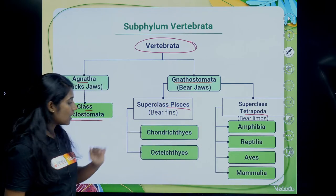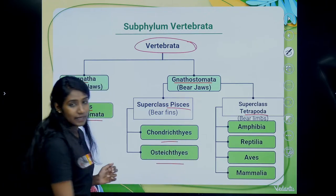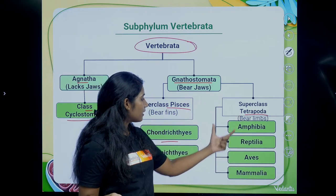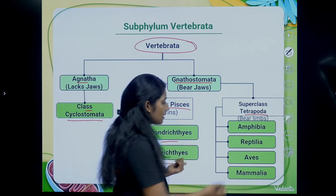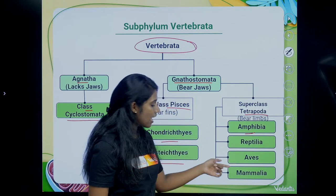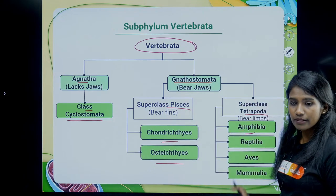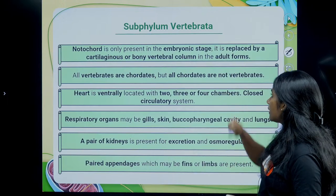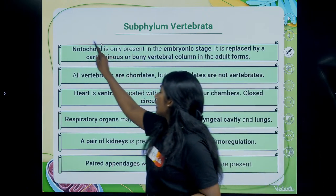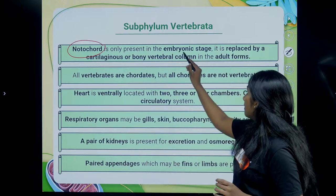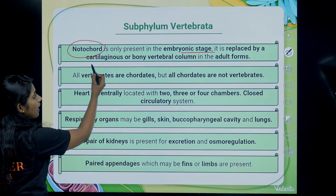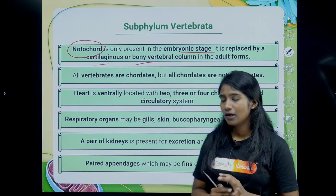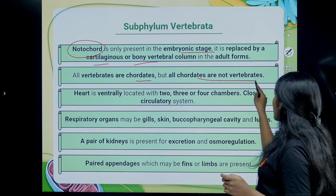Under Pisces, there are two classes: Chondrichthyes and Osteichthyes. Under Tetrapoda, which are vertebrates with jaws and limbs, the subclass has four categories: Amphibia, Reptilia, Aves, and Mammalia. In Vertebrata, the notochord is present only in the embryonic stage and is replaced by a cartilaginous or bony vertebral column in the adult. All vertebrates are chordates, but all chordates are not vertebrates.